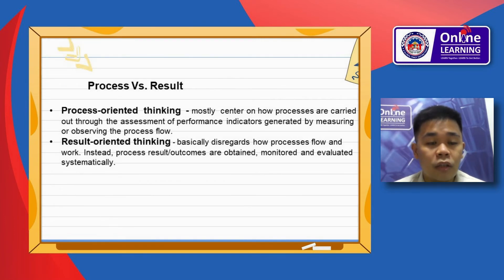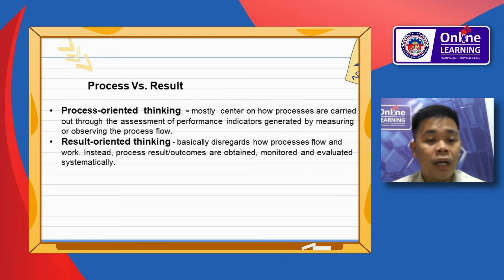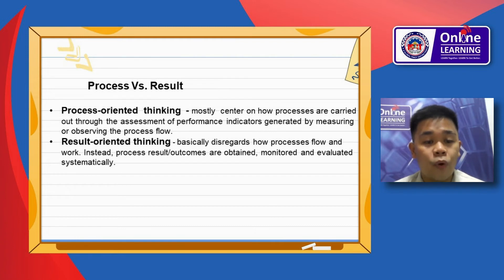Process versus result. Process-oriented thinking is mostly centered on how processes are carried out through the assessment of performance indicators generated by measuring or observing the process flow. Result-oriented thinking basically disregards how processes flow and work.